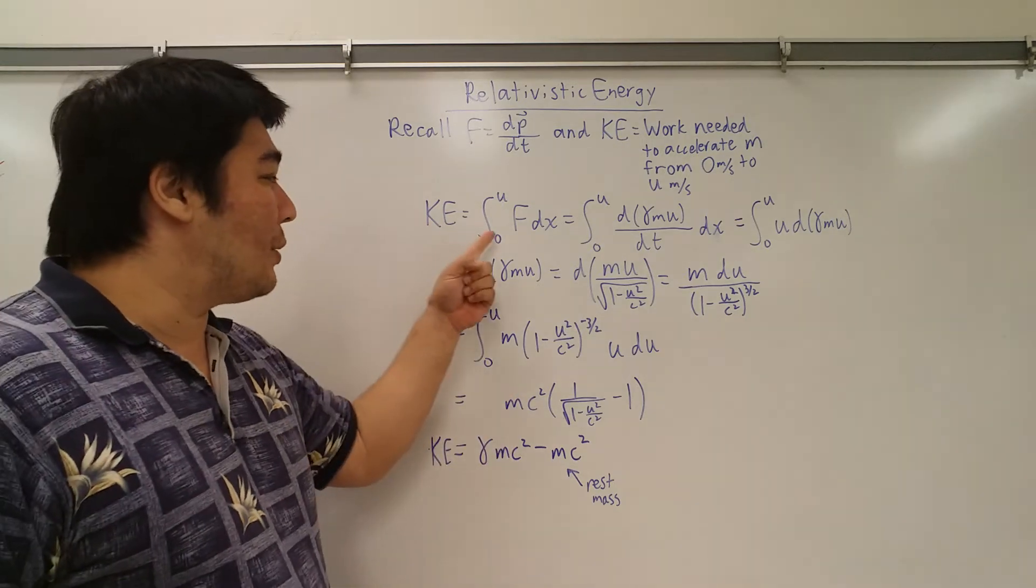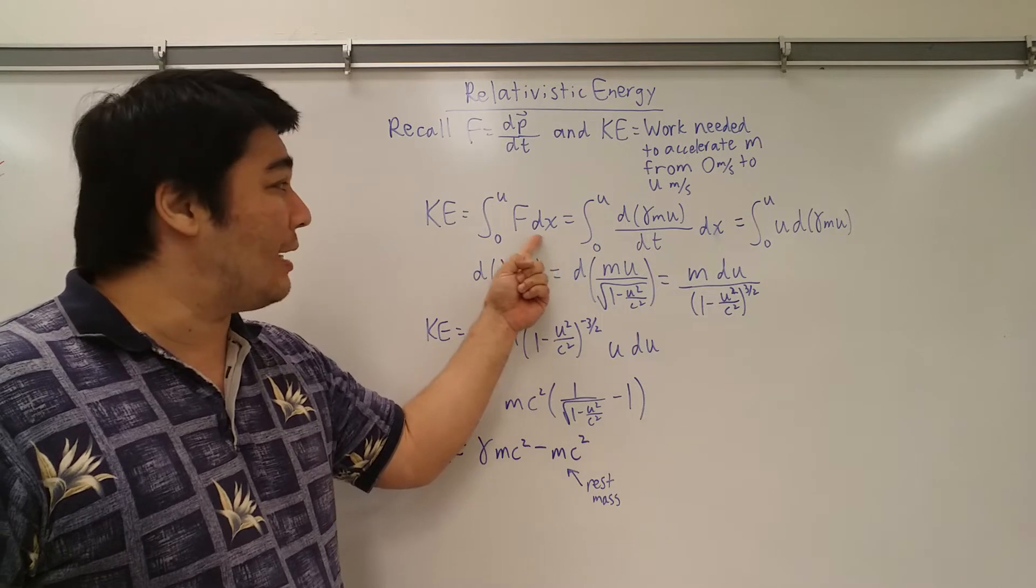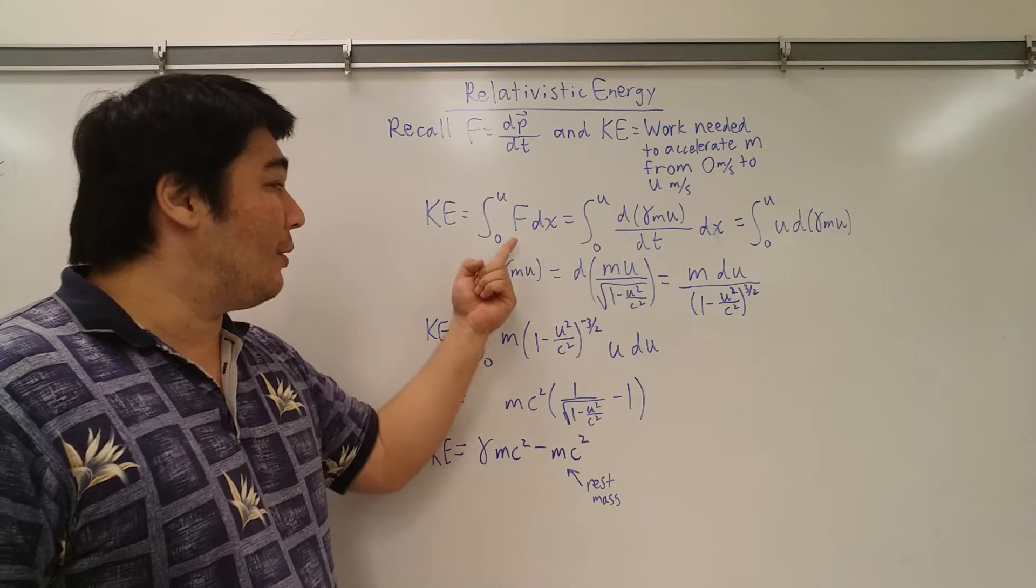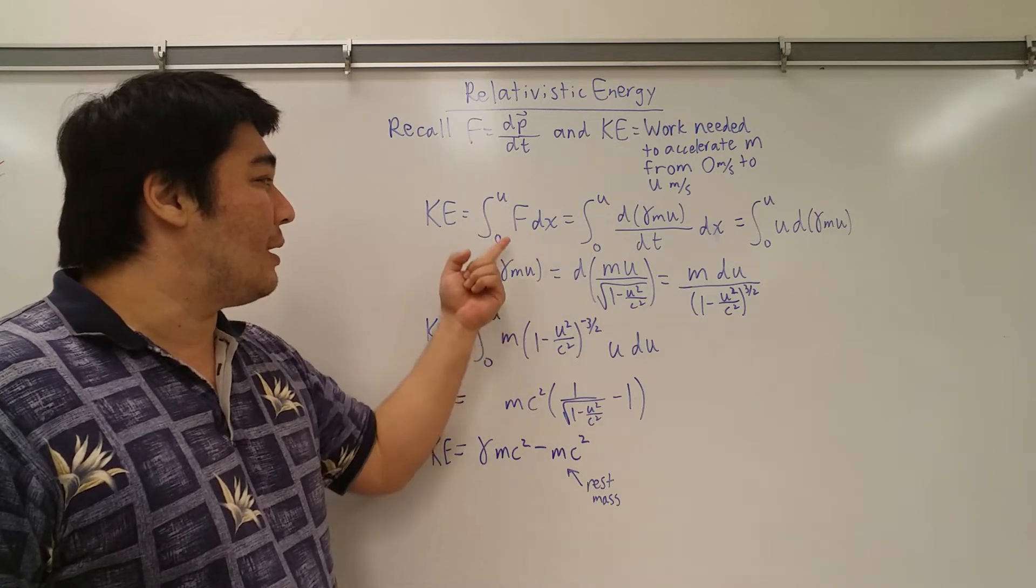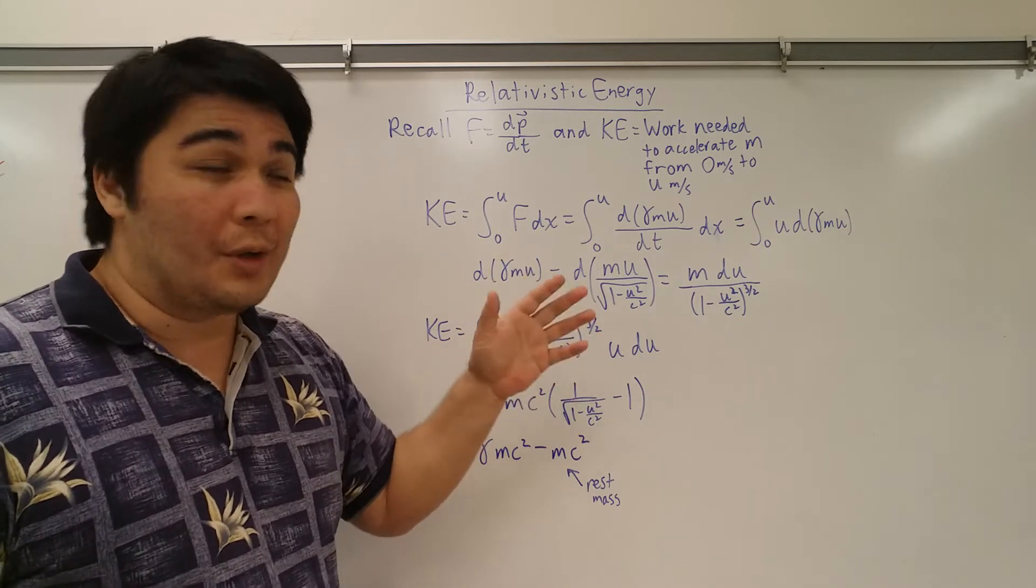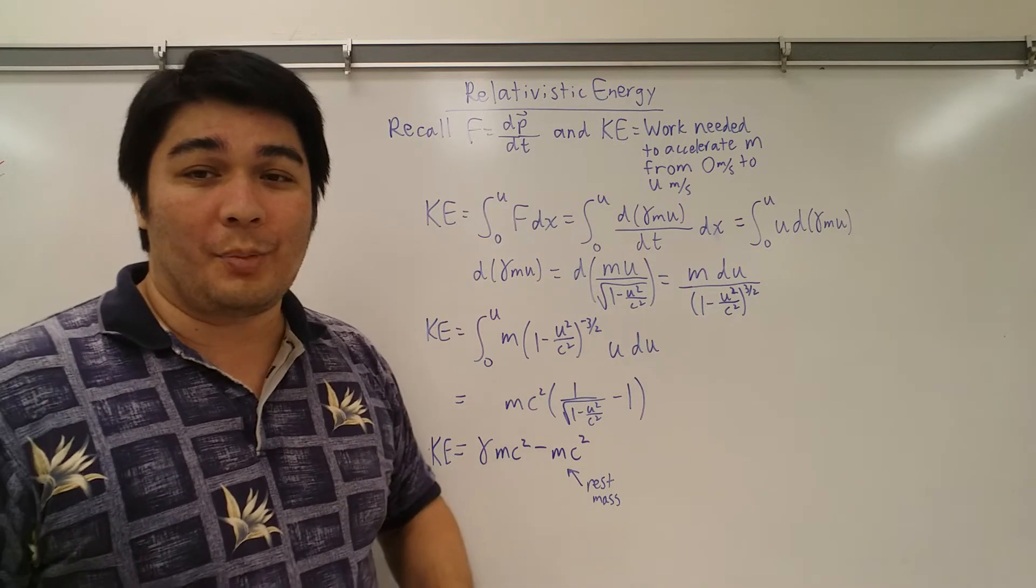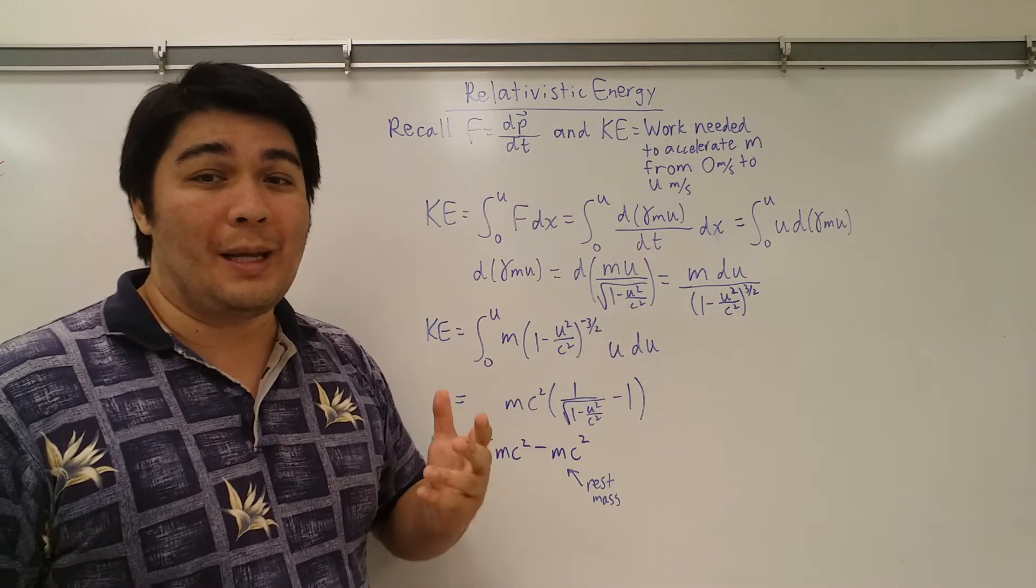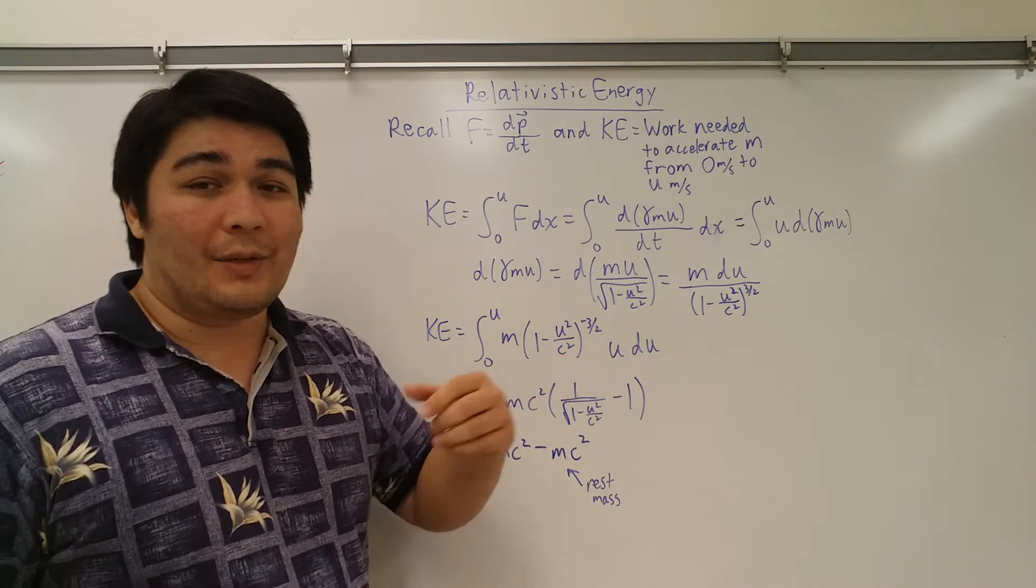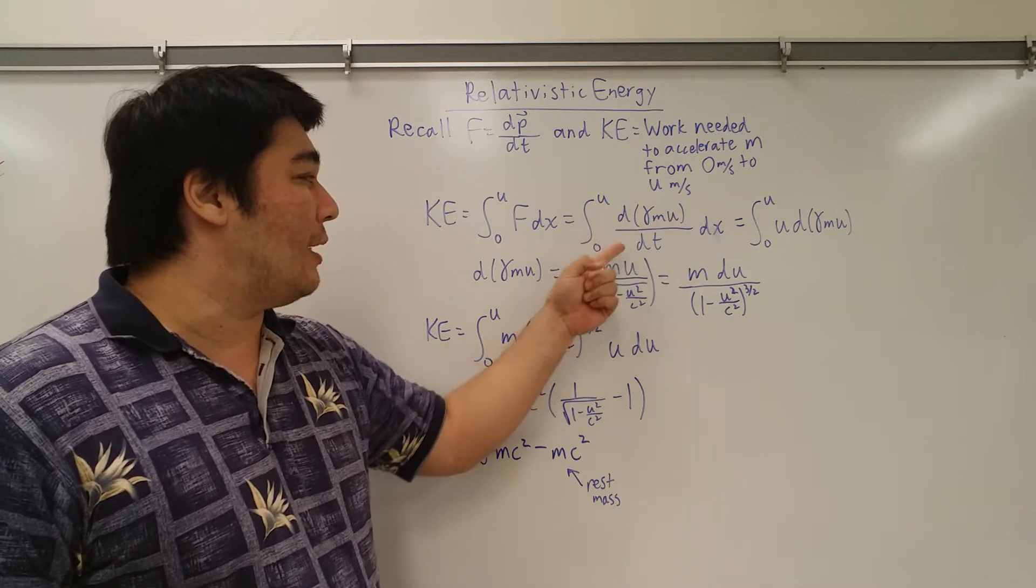In order to solve for this, we're going to take our kinetic energy equation, which is the work equation, which is force times distance, and we're going to integrate that. So we're taking a definite integral of force times distance, force dx. But our force, which we recall is dp/dt and p from our previous video on relativistic momentum, all of this stuff has to be taken into account. So now that we have relativistic momentum involved, we're going to have to substitute that over here.